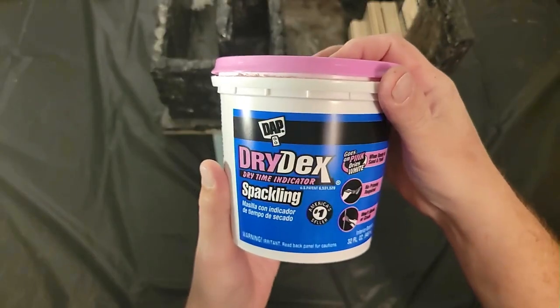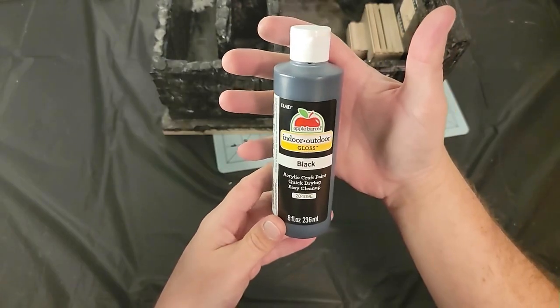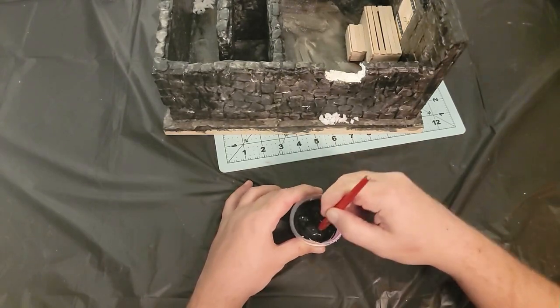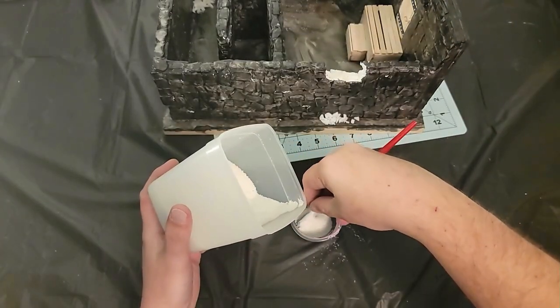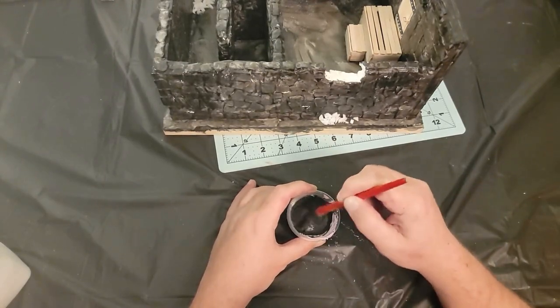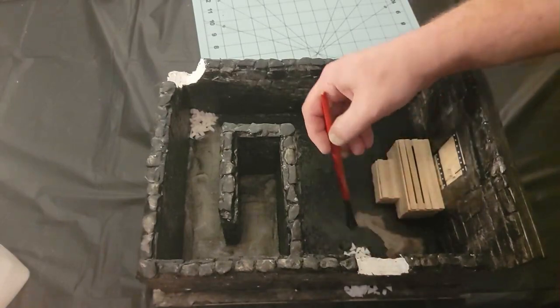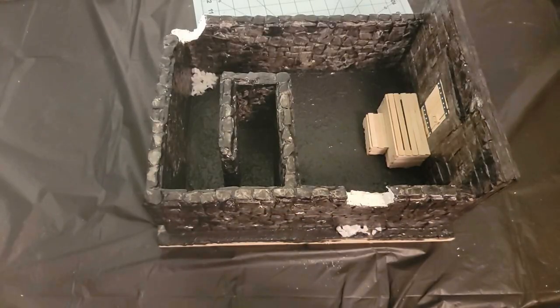Here's where I decided to fix the ground area that I wasn't happy with. I took an even mix of spackle and Mod Podge and mixed it together with some black paint. Then I added some sand to the mixture to give it the grainy look I wanted. Once everything was mixed really well, I painted the mixture onto the base of the diorama, making sure to cover as much as I could without too much care, even going around the outside and the back of the structure.